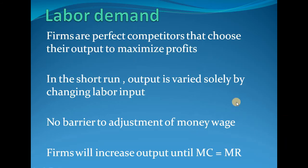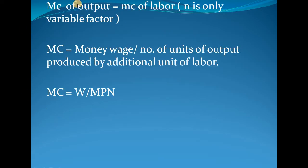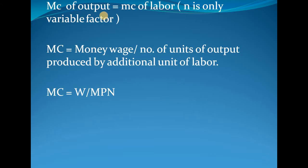The marginal cost of output equals the marginal cost of labor, because labor is the only variable factor. Fixed factors like machinery have zero additional cost — once purchased, producing extra output incurs no additional cost for that factor. Therefore, we can use the terms interchangeably: marginal cost of output is basically the marginal cost of labor.